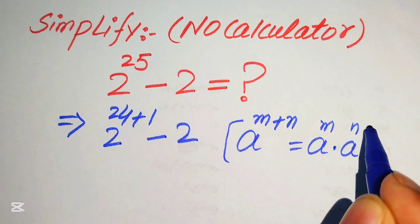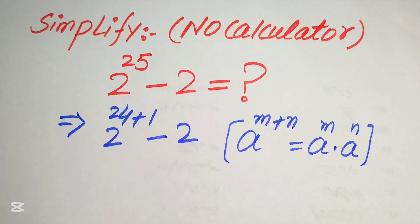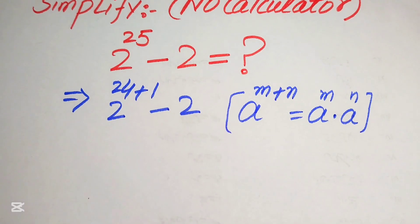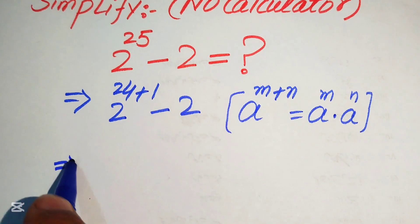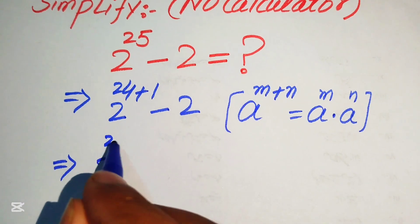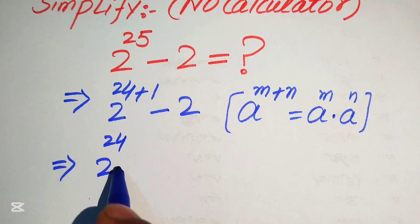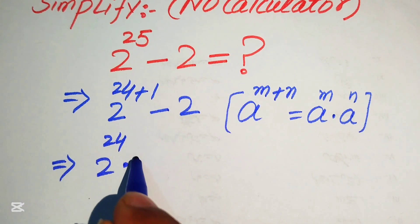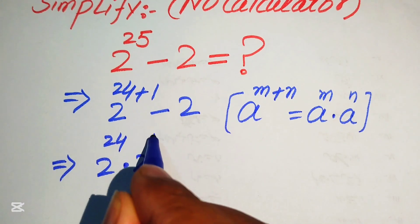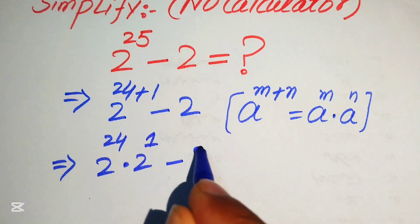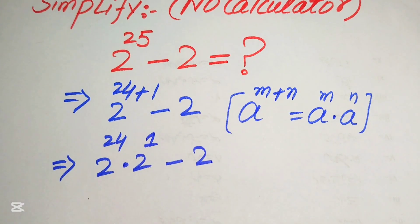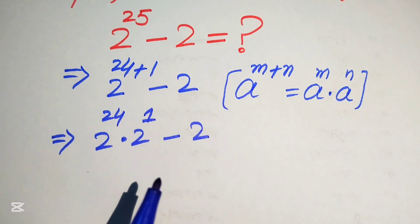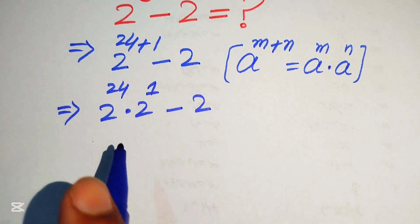According to this exponent law, we break the exponent of this term, and it will be written as 2 to the power of 24 multiplied by 2 to the power of 1, minus 2.